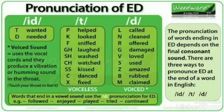So, the pronunciation of '-ed' is T, D, or ID — depending on the last sound. If the last sound is voiceless, we use T. If voiced, we use D. If the verb ends with T or D, we cannot add another T or D, so we use ID.